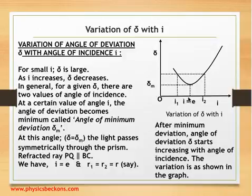At angle δ equal to δₘ, the light passes symmetrically through the prism. The refracted ray PQ becomes parallel to the base of the prism—this is a very important result. We have angle i equal to angle e, and therefore r₁ equals r₂ equals r. The subscripts lose their meaning because r₁ and r₂ are equal, so we take each angle as r. Beyond minimum deviation, the value of δ starts increasing with increase in angle of incidence.